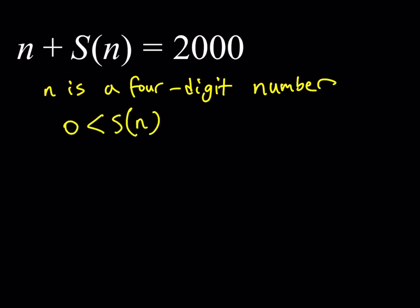But at the same time, if you think about it, a four-digit number, if it's composed of all nines, like 9999, then the sum is going to be 36. So the sum of the digits of our number needs to be less than or equal to 36. That's the highest it can be, right, as a four-digit number.